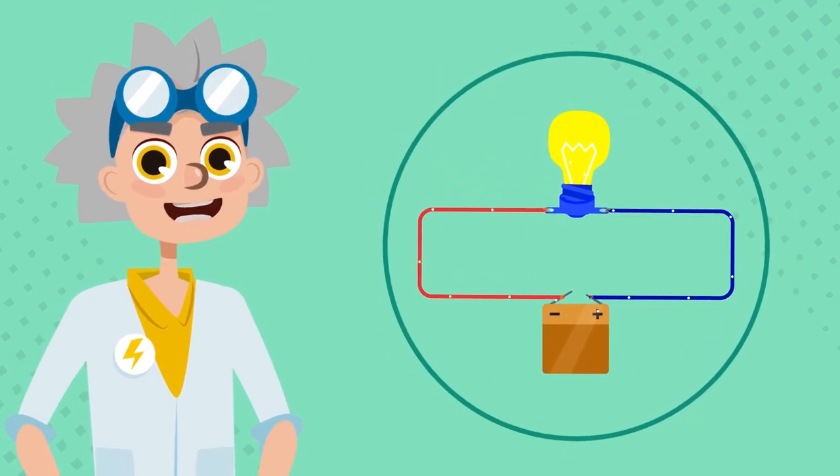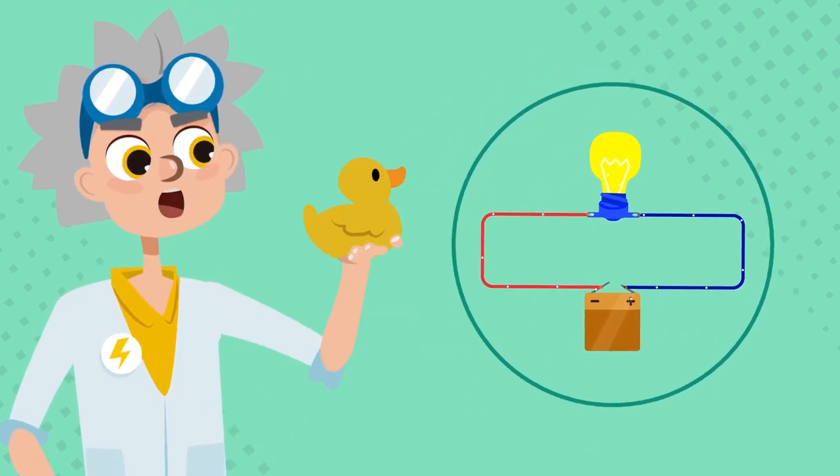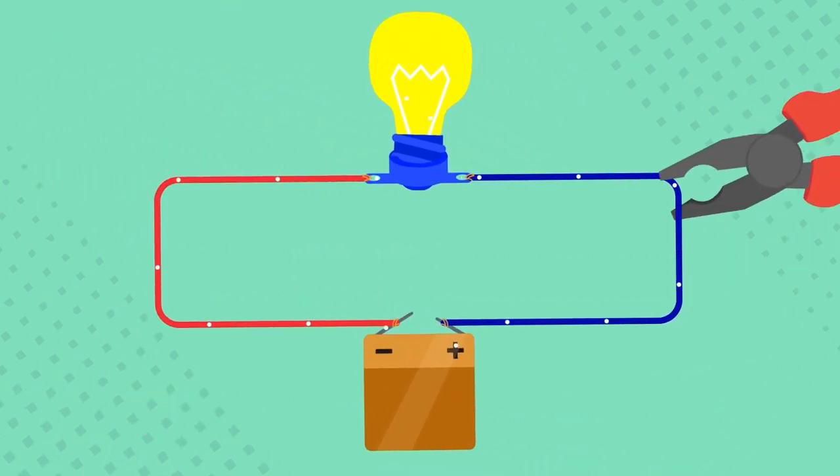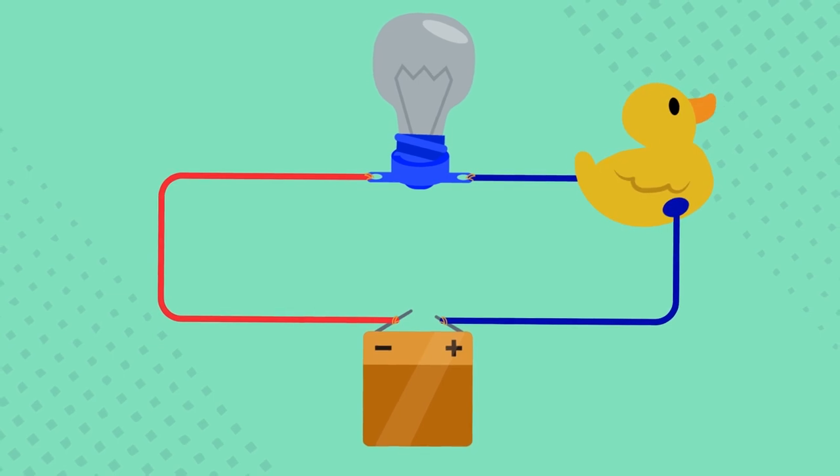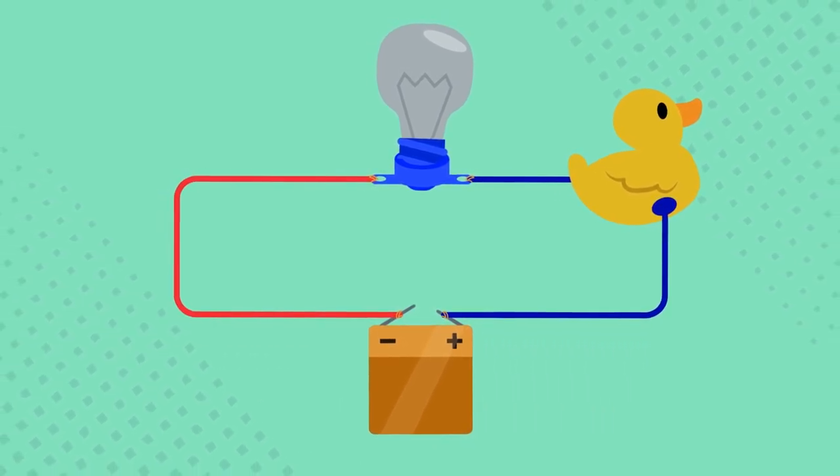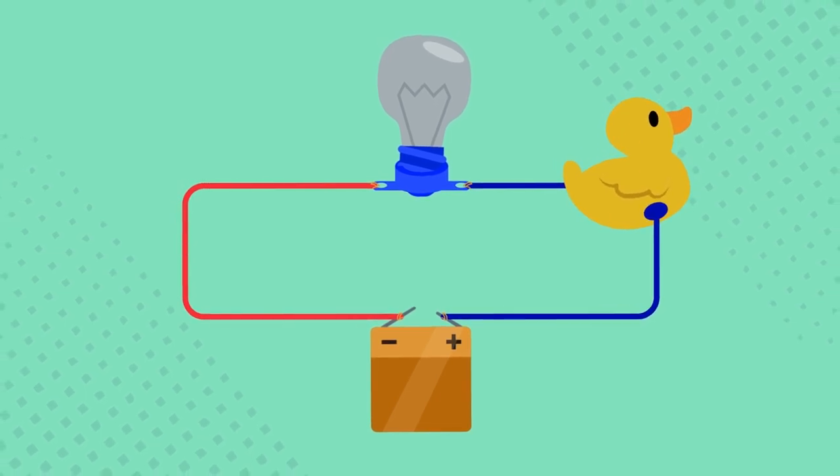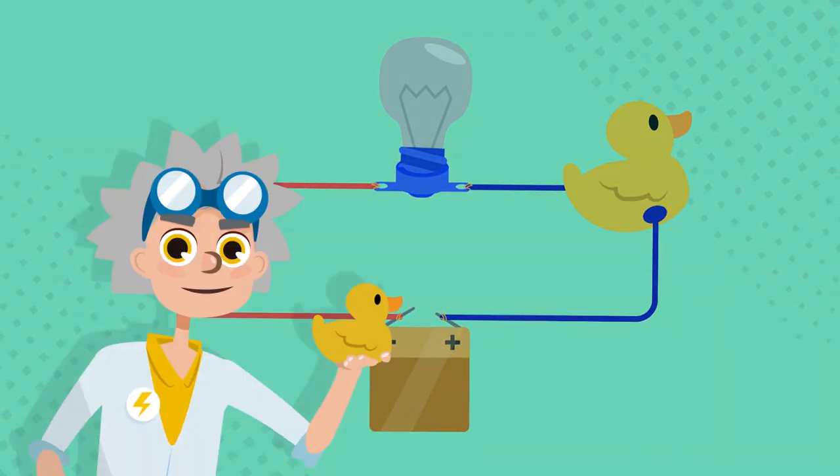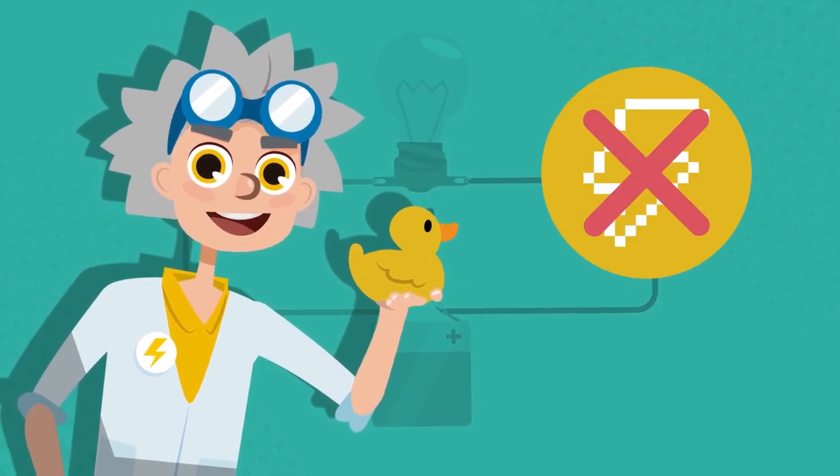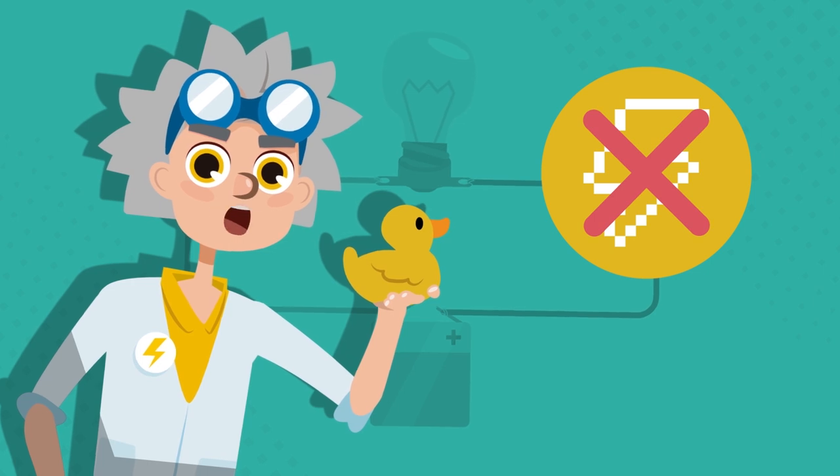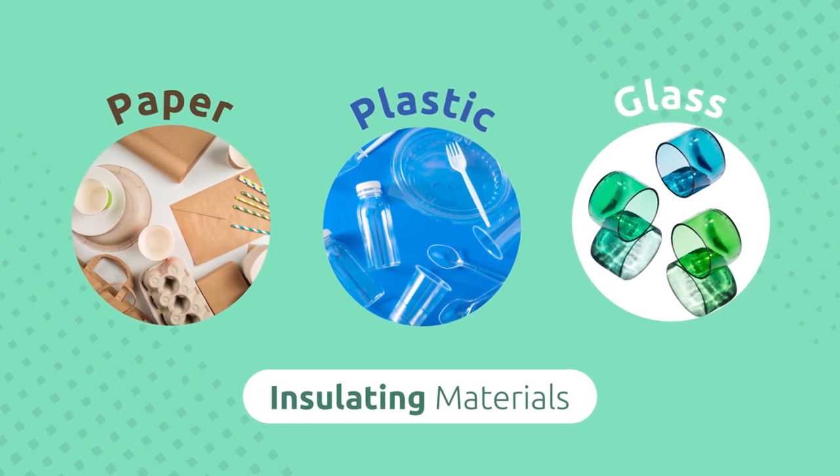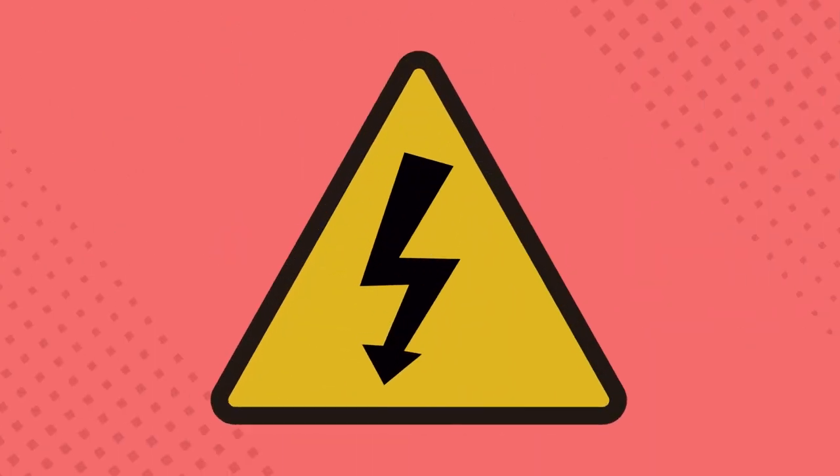Let's try another type of material. Look at this rubber ducky. If we attach it to the circuit, what will happen? Will the light bulb turn on? Oh, the light bulb didn't turn on. The little ducky is made of rubber, and rubber is an insulating material. Insulating materials do not allow electric charges to flow through them. That's why the light bulb didn't light up. Other materials such as paper, plastic, or glass are also insulators.